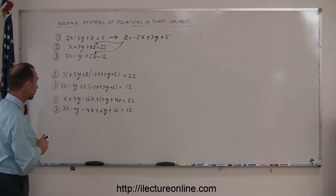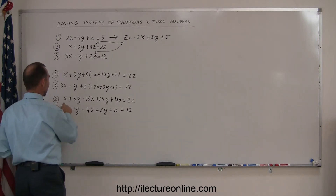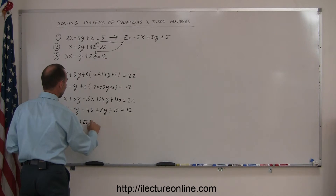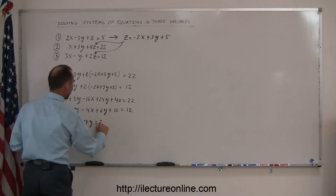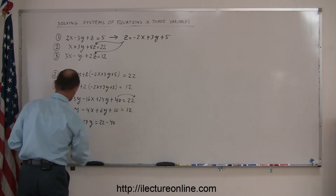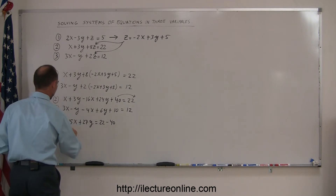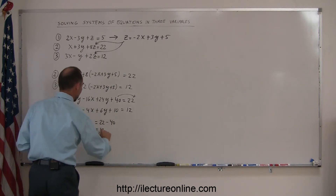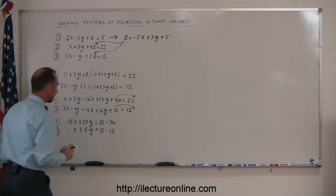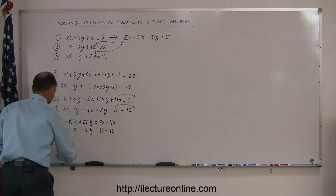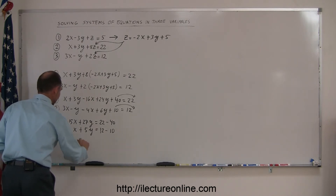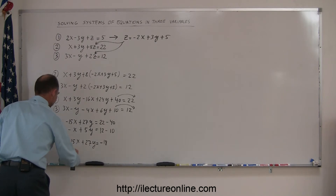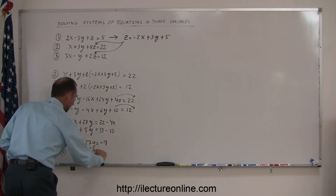Continue to simplify those two equations, combining all like terms. Equation number two becomes x minus 16x which is minus 15x, 3y plus 24y is plus 27y, equals 22 minus 40 which is minus 18. Equation number three is 3x minus 4x which is minus x, minus y plus 6y is plus 5y, equals 12 minus 10 which is 2. So equation two is minus 15x plus 27y equals minus 18, and equation three is minus x plus 5y equals 2.